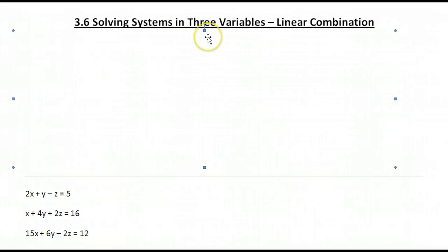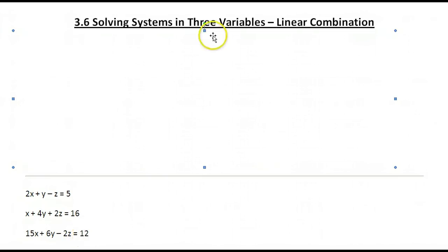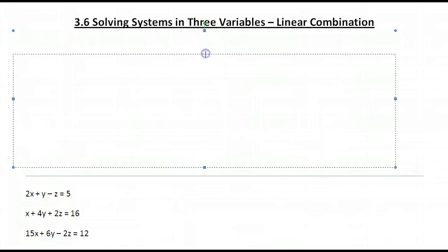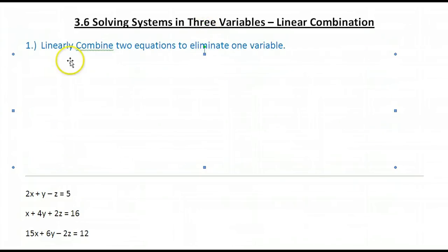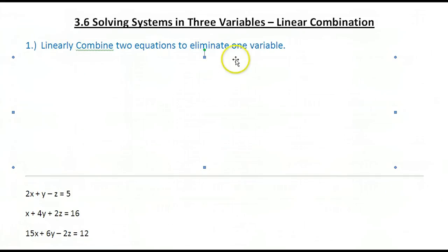In order to solve a three-variable system, we're first going to take this three-variable system and turn it into a two-variable system. To do that, we need to first take two equations and linearly combine them to eliminate one variable. Notice it doesn't say which variable to eliminate — we can eliminate any variable we choose.